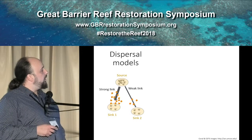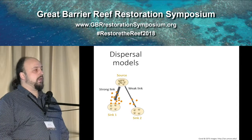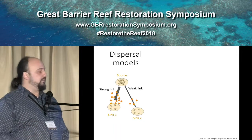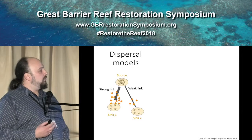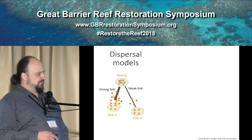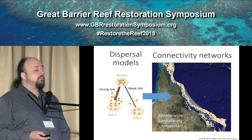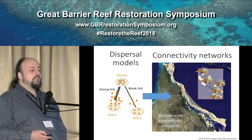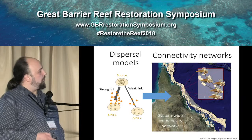So we can simulate the larval dispersal from a source reef and see where those larvae end up and where they're more likely to go — which connectivity links are stronger or weaker. With these models we can simulate the dispersal from one reef, but we can also simulate the dispersal of all the reefs on the GBR, which gives us a connectivity network in which we can then focus on a particular area and see how these reefs are connected by larval exchanges, either coral or COTS.